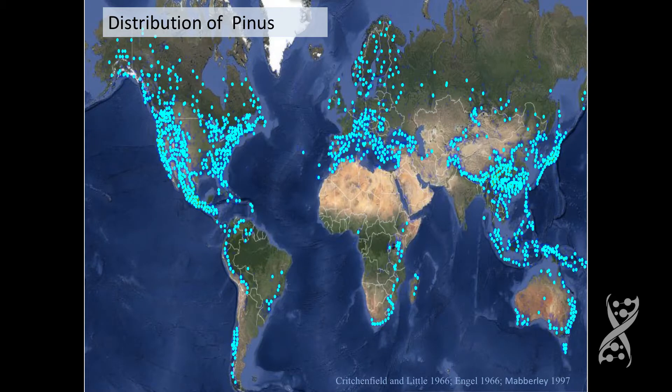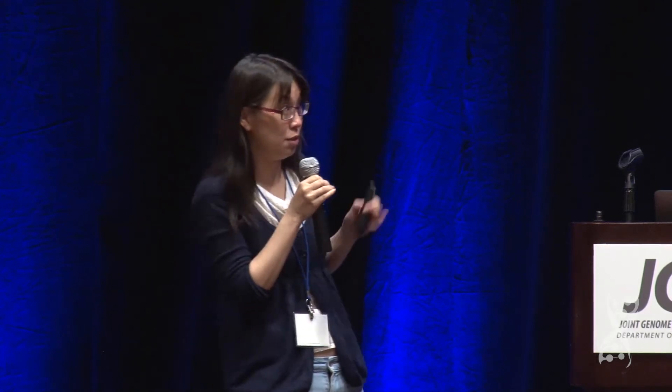We think pine is a really great system for us to study because pine is among the most important of the forestries across the world, covering really diverse geographic areas, environmental conditions, and a diversity of varieties in terms of species.